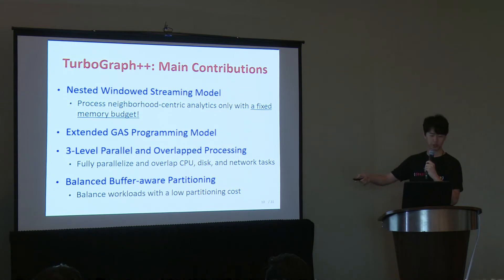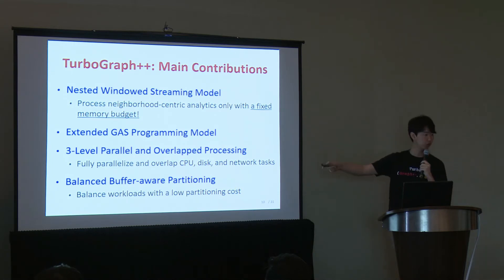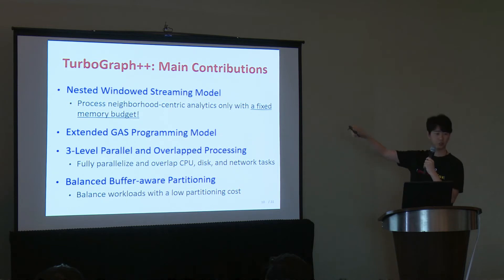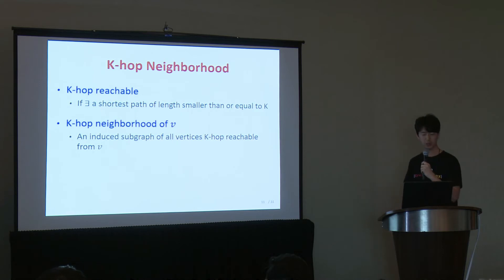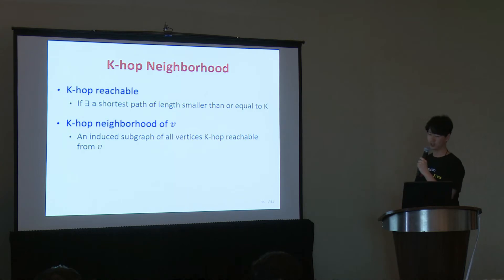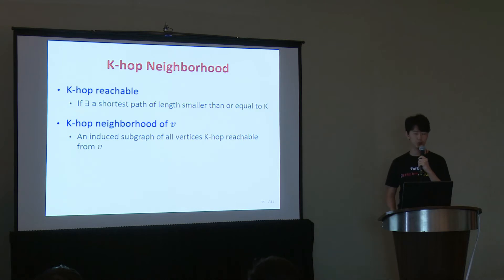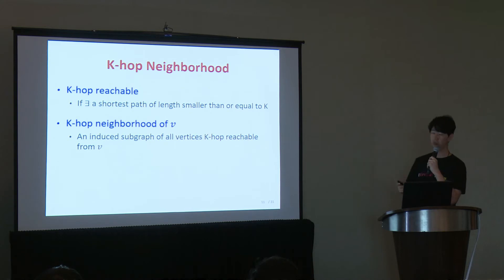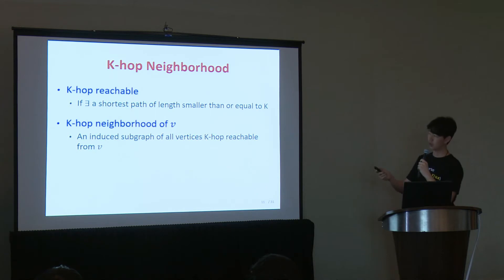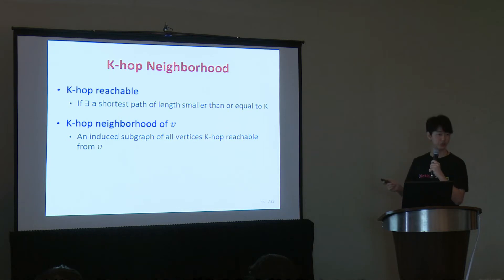In the following presentation, I will explain these contributions in order, focusing mostly on the first two parts due to time constraints. Before explaining our processing model, we first define some concepts to abstract neighborhood-centric analytics. We say that a vertex is k-hop reachable from another one if there is a shortest path of length less than or equal to k. The k-hop neighborhood of a vertex v is defined as an induced subgraph of all vertices k-hop reachable from v.